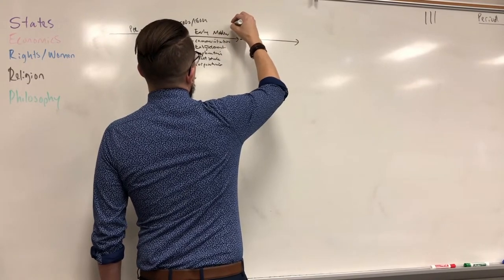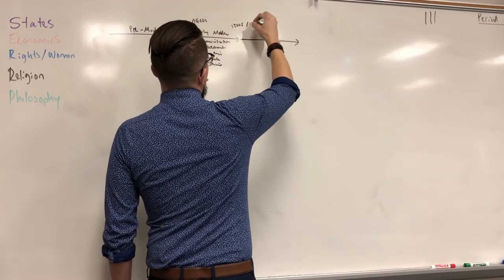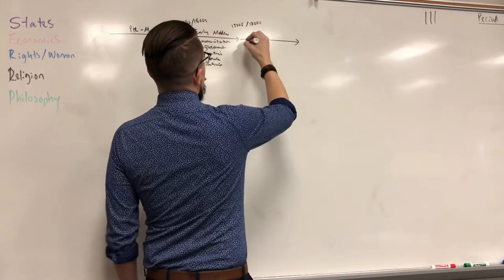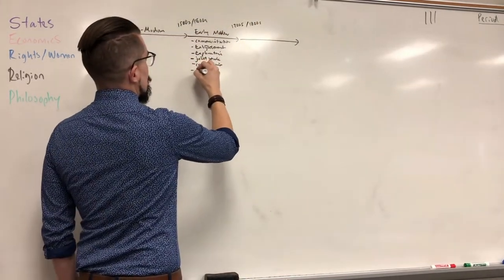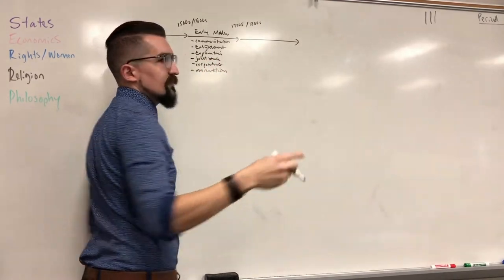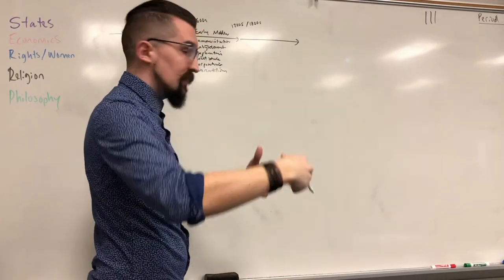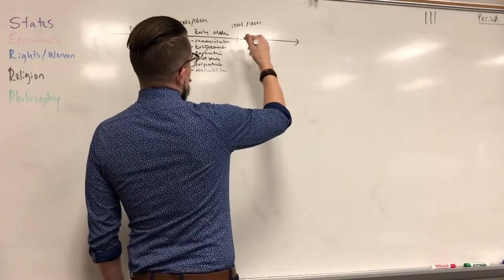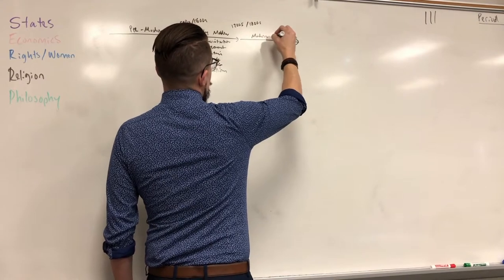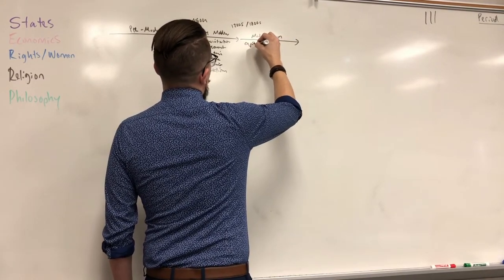Around the mid-1700s we have this shift to modern economics. Before that was mercantilism — fixed wealth, lots of tariffs, make everything yourself to keep all the money. Then Adam Smith blows this whole thing up with his ideas on capitalism and wealth creation through labor.